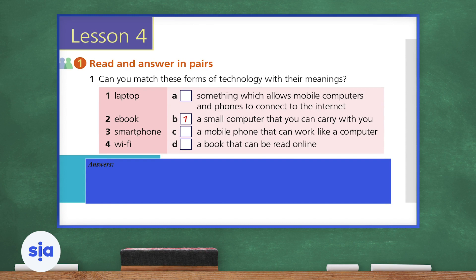Now let's go on to lesson four, exercise one. We're going to read and answer in pairs. So if you have a partner at home, maybe that partner can help you. Can you match these forms of technology with their meanings? So we have laptop, ebook, smartphone, and wifi. Now letter B is done for us. A small computer that you can carry with you is a laptop.